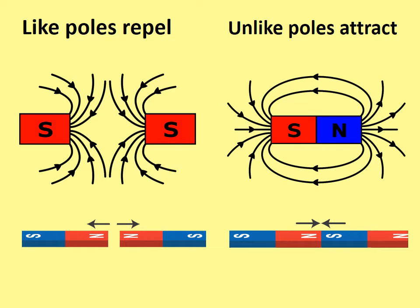When two like poles are together, they repel. When two unlike poles are together, they attract.